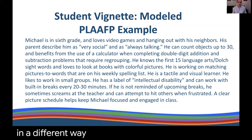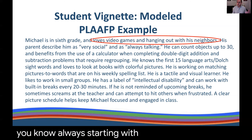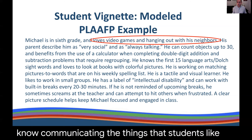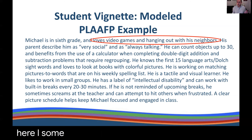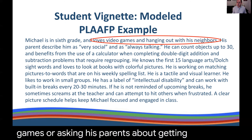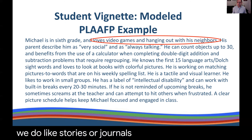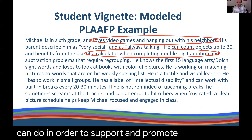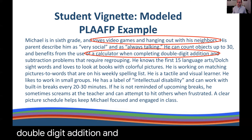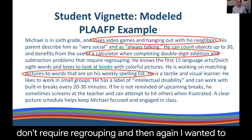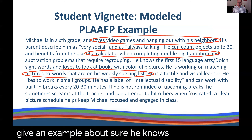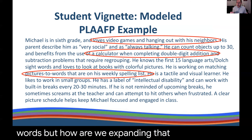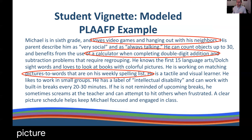This unpacks things in a different way. Always start with strengths and communicate the things students like. Here, I have a fighting chance to modify and infuse Michael's interests into the curriculum — infusing pictures of video games, or getting pictures of his neighbors to use in stories or journals. We also include what teachers can do to support student success — in this case, a calculator for double-digit addition and subtraction. And sure, he knows 15 Dolch sight words, but how are we expanding and building those skills? Michael is matching pictures to words on the spelling list, because that is a valid form of literacy we'll build over time.